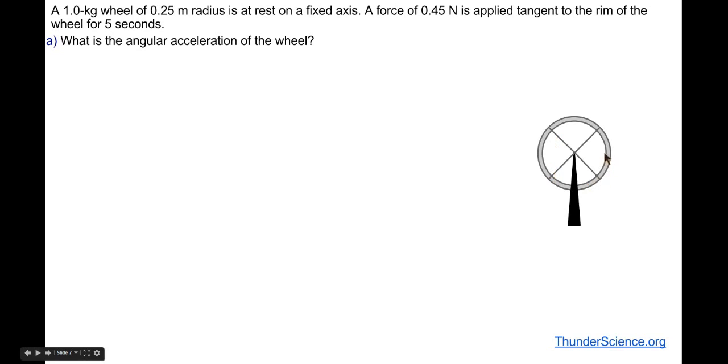We've got a one kilogram wheel, so we're just focusing on the wheel. It's got a 0.25 meter radius. It's at rest on a fixed axis, a force of 0.45 newtons is applied tangent to the rim for five seconds. We want to find the angular acceleration of the wheel. Step one is determine what we're accelerating, and it's going to be the wheel. We'll call up and to the right positive and counterclockwise positive.